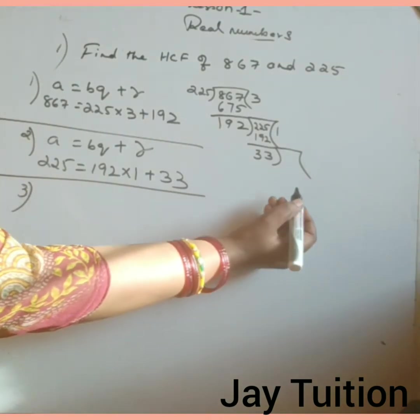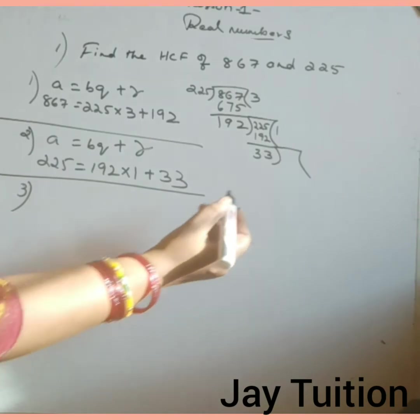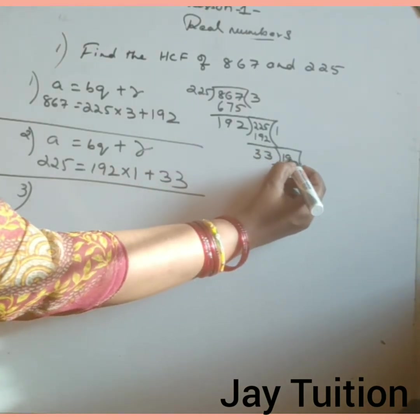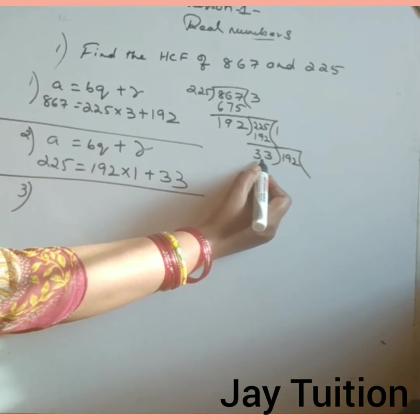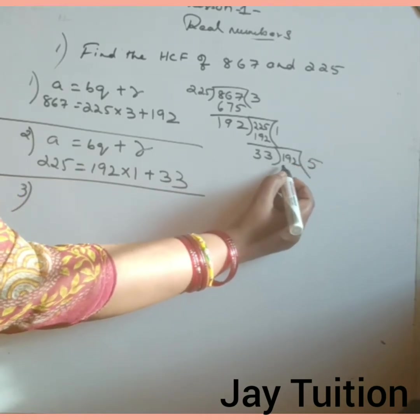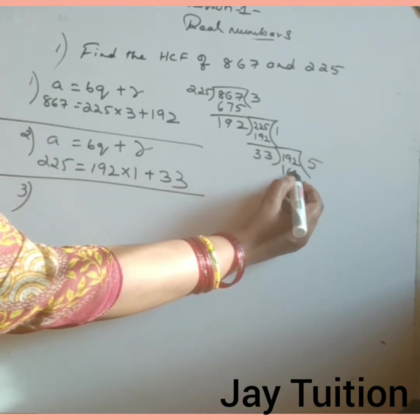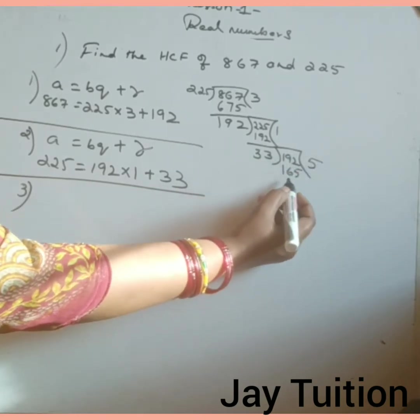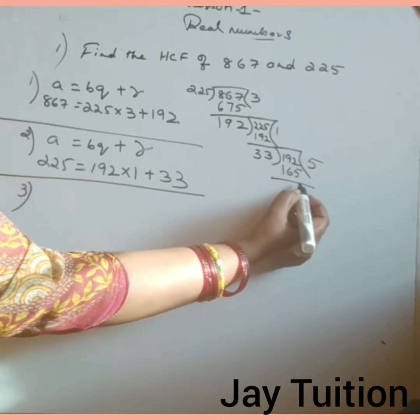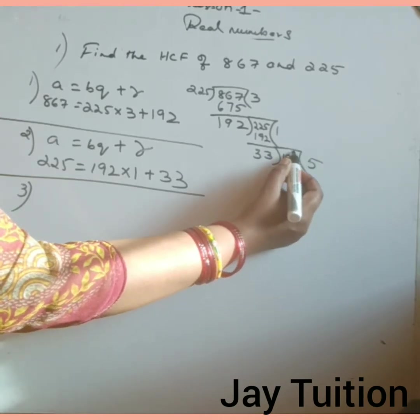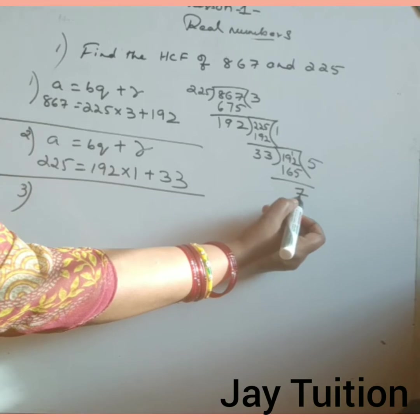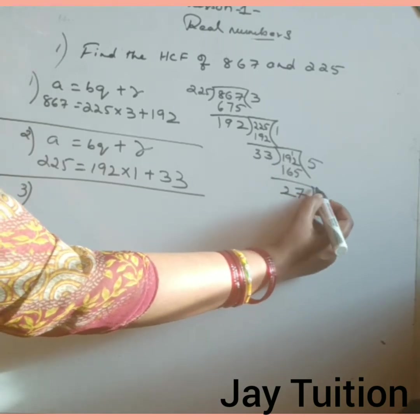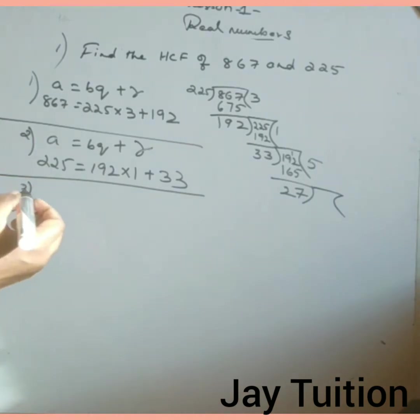Third step. Till you get 0, you have to continue the sum. 192 divided by 33 goes 5 times, that is 165. If you subtract, 12 minus 5 is 7, 8 minus 6 is 2, so 27.